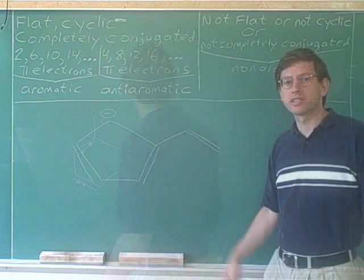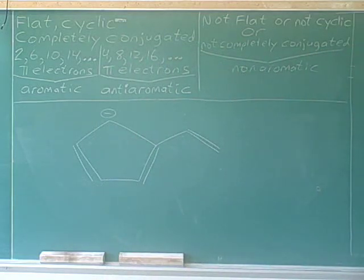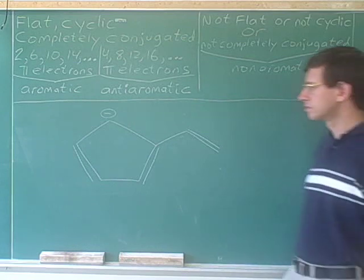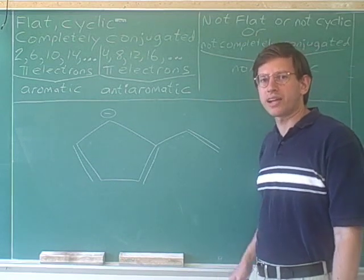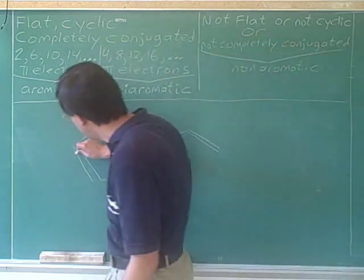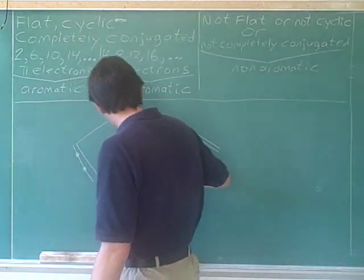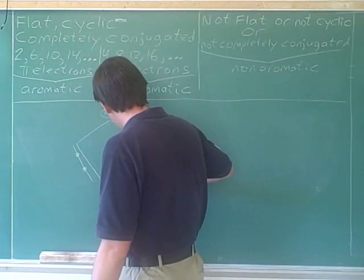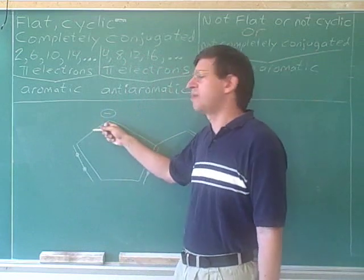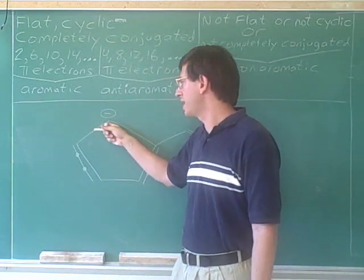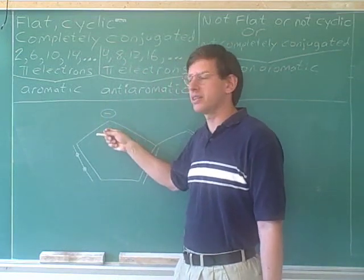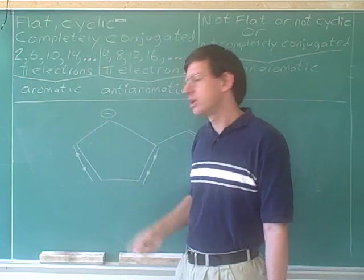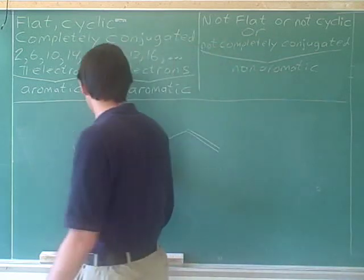What category is this molecule in? Let's count the pi electrons in the ring. There are two electrons in this pi bond, two electrons in this pi bond. Since this is a carbanion, we know it also has a lone pair, and it's going to put the lone pair in its p orbital, so the lone pair here also counts as pi electrons.